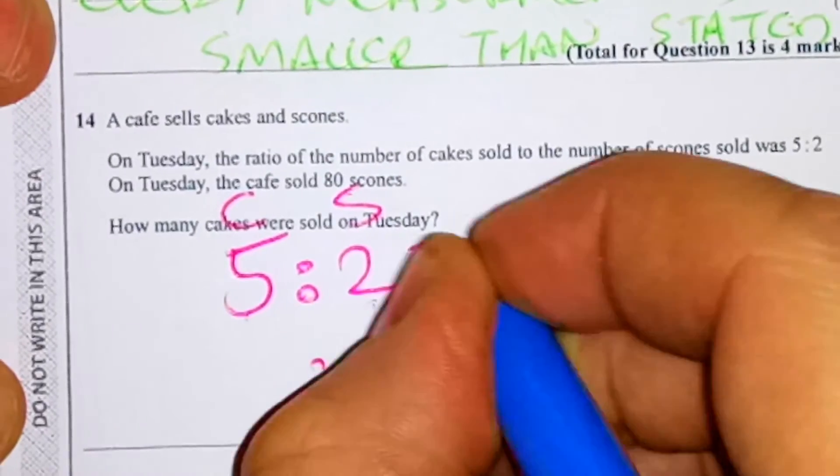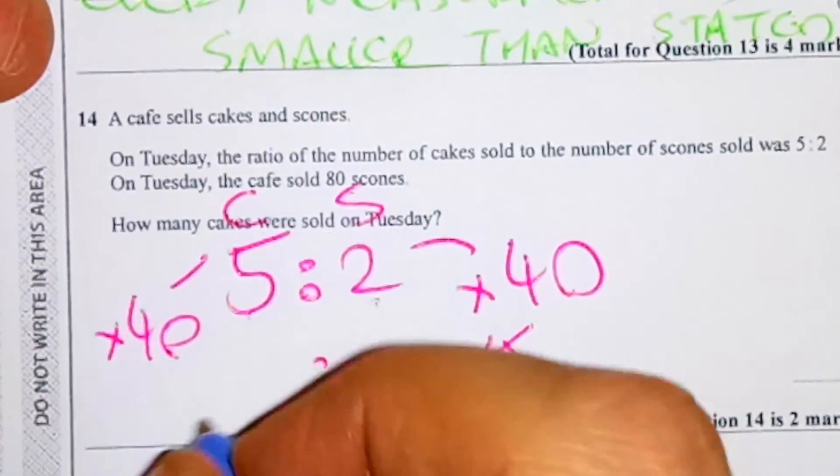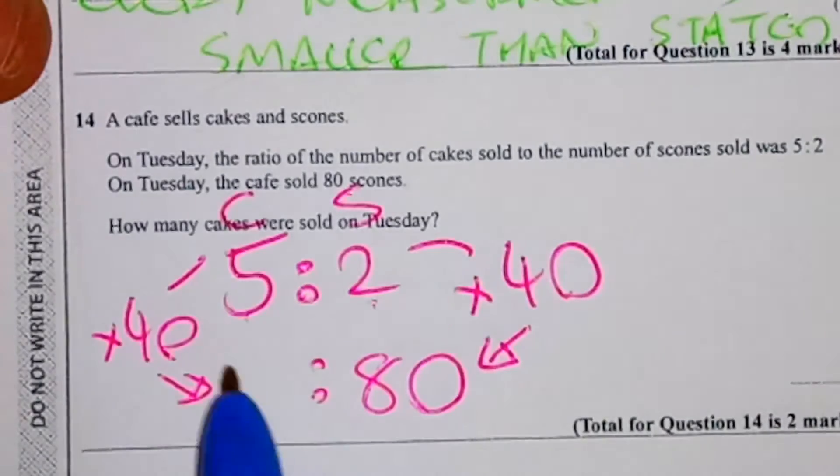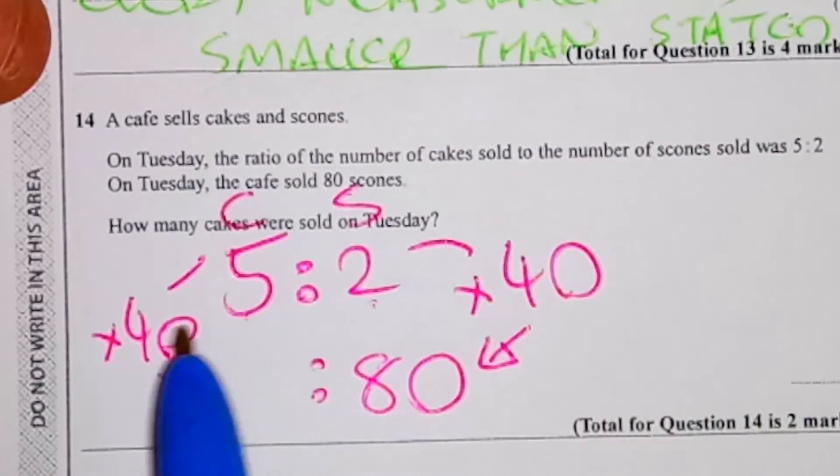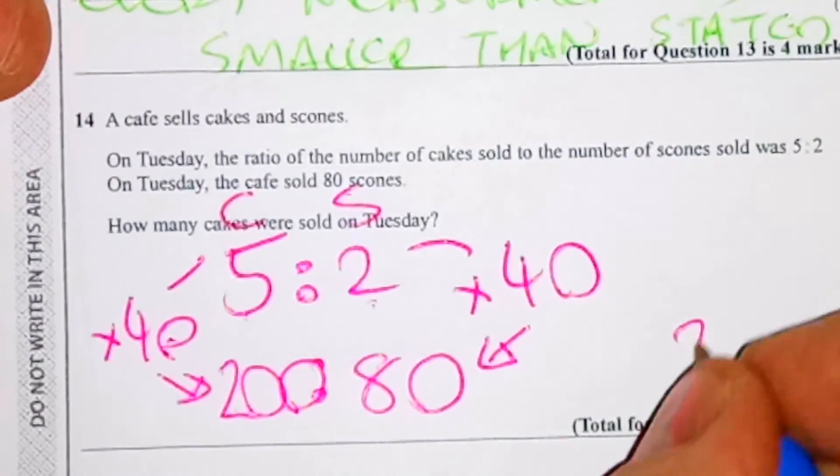We multiply it by 40. So here we need to multiply it by 40. It might be a little bit hard at 5 times 40 but let's do 5 times 4 which is 20. And we've got a 0 there. So my answer is 200.